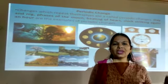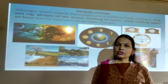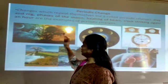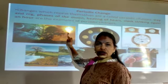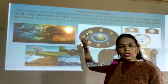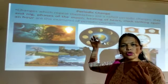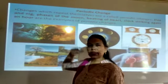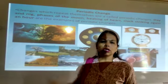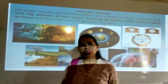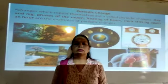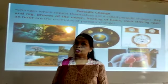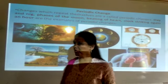Here we have to see the comparison of fast change, slow change, and periodic change. Everyday the sun rises in the morning at 5 or 6 o'clock, and sets in the evening. It always rises in the east direction and sets in the west direction — that is periodic change.